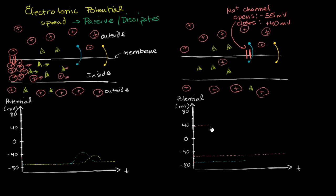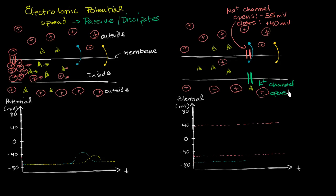So the sodium channel closes at positive 40 millivolts. And let's say we also have a potassium channel right over here — the infamous leaky potassium channels, which are the true reason why we have this voltage difference across the membrane. This potassium channel opens when the sodium channel closes, so it opens at positive 40 millivolts, and closes at negative 80 millivolts.